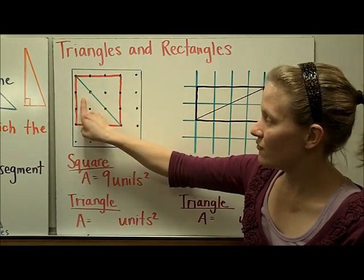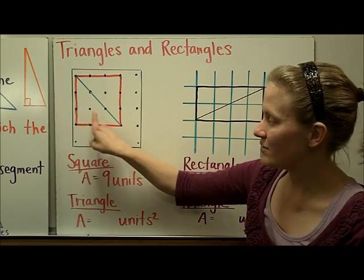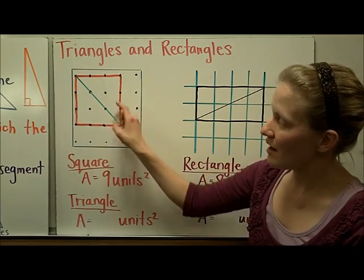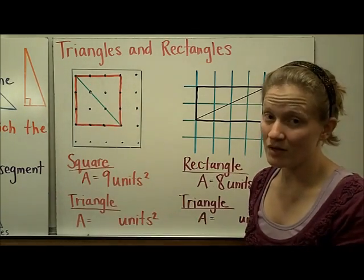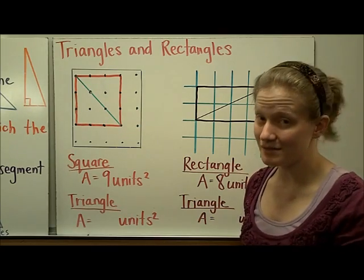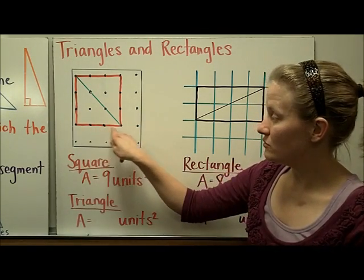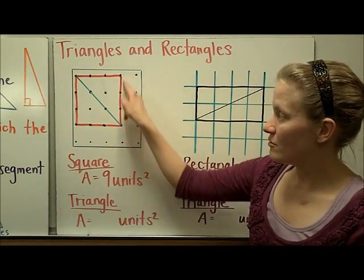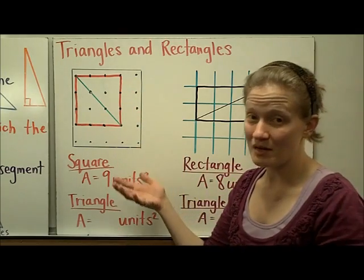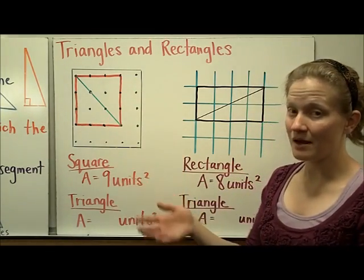This would be one square, two, three, four, five, six, seven, eight, nine. So the area of this square is nine square units. Or you could also figure that out by doing side times side: three on this side, three on this side, three times three equals nine. So we agree that the area of the square is nine.